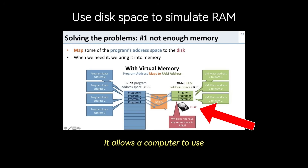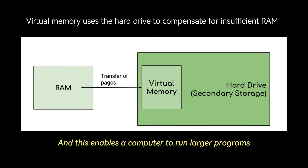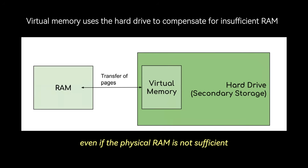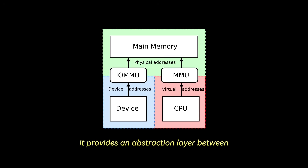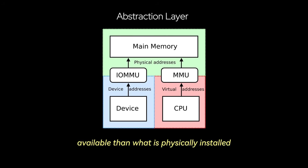It allows a computer to use more memory than is physically available by using a combination of RAM and disk storage. This enables a computer to run larger programs or multiple applications simultaneously, even if the physical RAM is not sufficient. At a high level, it provides an abstraction layer between physical memory and the applications, making it appear as though there is more memory available than what is physically installed.